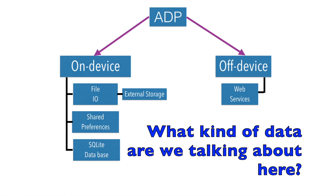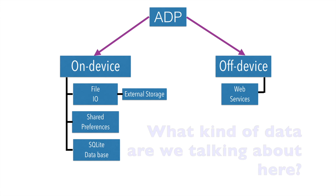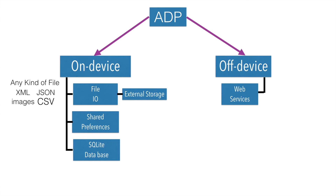The next question is: what kind of data do you typically deal with in all of these scenarios? In case of file IO, it could be any kind of data — XML files, JSON files, images, CSV, Java serialization and deserialization. You can pretty much do whatever you can do with Java in Android.